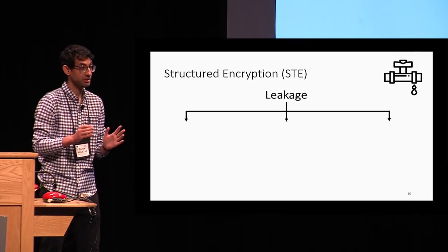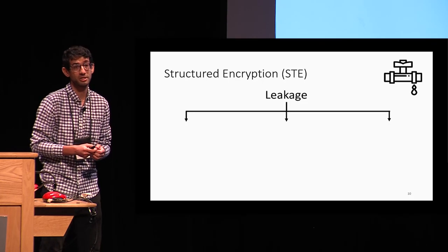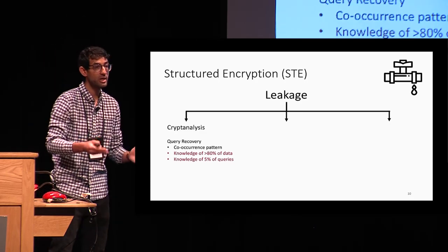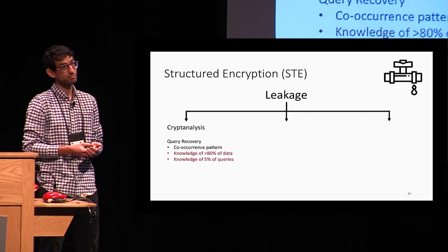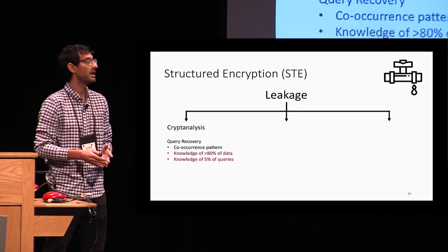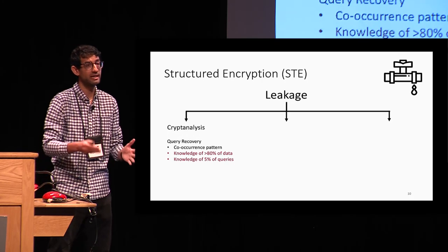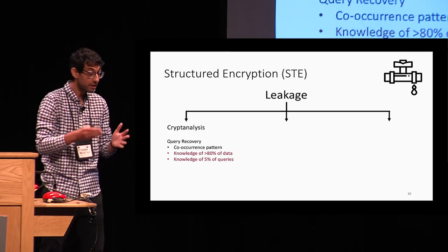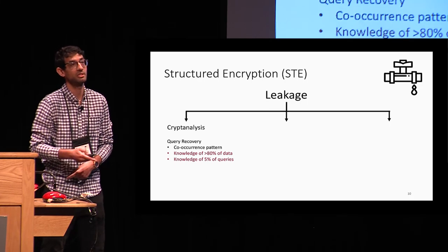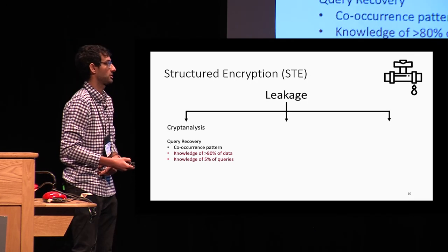We have identified three main directions that will help us better understand leakage in structured encryption. First, cryptanalysis — designing attacks for a specific leakage profile under specific assumptions. The two query attacks we are aware of, IKK and the counterattack, require the co-occurrence pattern, but rely on very strong assumptions such as knowledge of more than 80% of the user's data and around 5% of the user's queries.